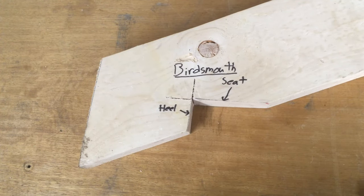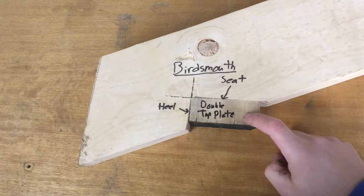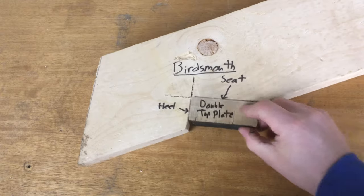The bird's mouth is made out of two cuts, the seat and the heel. The seat cut sits on top of your double top plate, and the heel is the end.